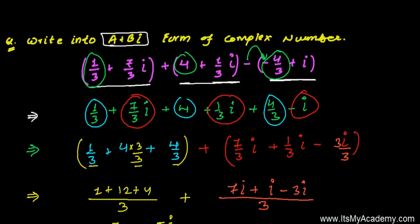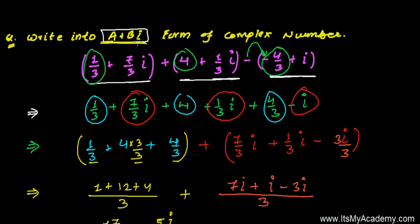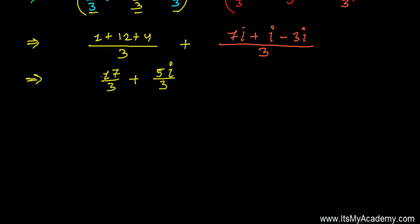So that's the required format. The question is asking to represent this into the a plus bi format, and we did that. Here this is our a, this is our b, and i is there. This is how you turn any expression with two or more complex numbers into the short form, the a plus bi standard format of the complex number.